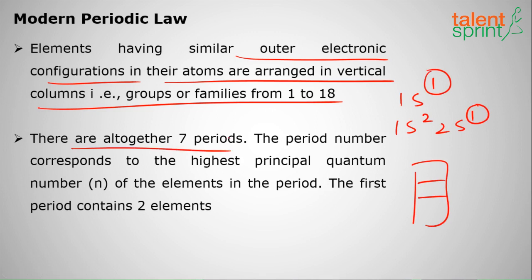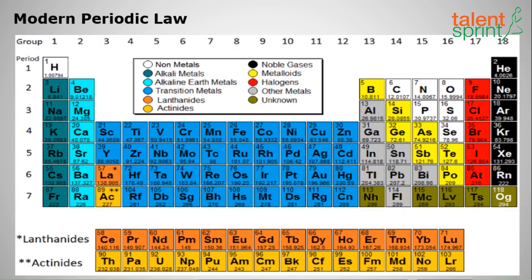There are 7 periods, and the period number corresponds to the highest principal quantum number n. The first period contains 2 elements. This is the modern periodic table with the modern periodic law. You can see they have similar properties.